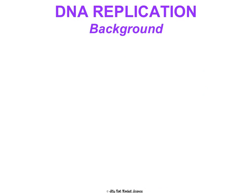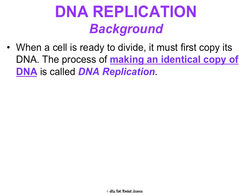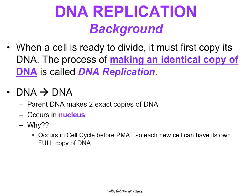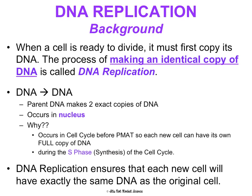We're going to talk about how sister chromatids get duplicated during the S phase of interphase — that's called DNA replication. When a cell is ready to divide, it first copies its DNA, making an identical copy. The parent DNA makes two exact copies, and this happens in the nucleus. It occurs during the synthesis phase of the cell cycle so that each new daughter cell has its own full, identical copy of DNA.